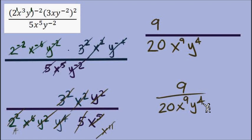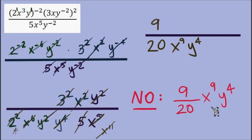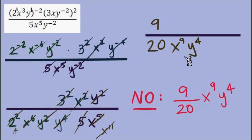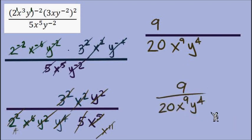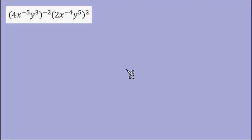I need to clarify something. This would not be right if you're thinking 9 over 20 times x to the 9th y to the 4th written out to the side — that says it's in the numerator, and that's not what we want for this problem. So that form should be avoided. Here's our next example — I'd like you to pause the video, try this one, and then restart the video and we'll look at the answer together.